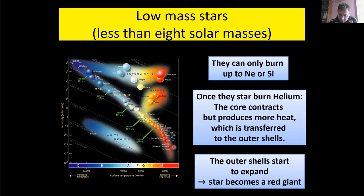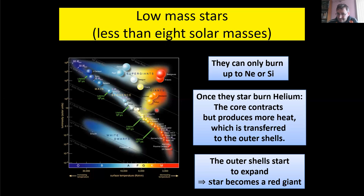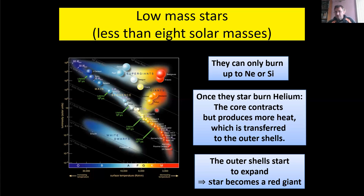Most stars we observe are on the main sequence. Everything below eight solar masses goes toward the giant branch. When hydrogen burning ends and helium burning ignites via the triple-alpha process, the core produces much more energy. It gets hotter, the gas expands, outer layers heat up, and the star expands — it becomes a red giant.